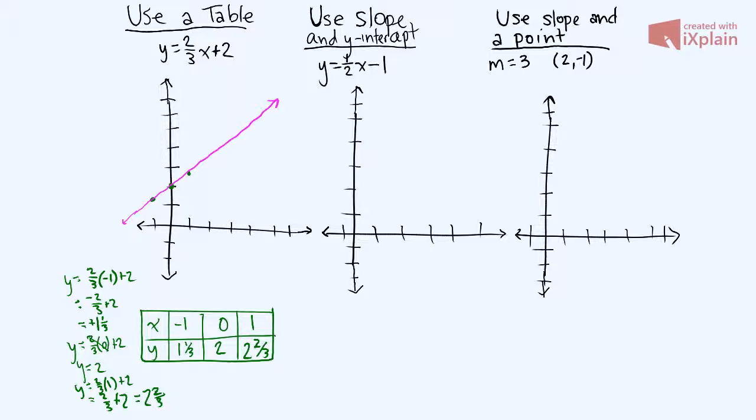The second option that we can do is we can use the slope and the y-intercept. So if it's in slope-intercept form, which is y equals mx plus b, we remember that our b is our y-intercept and m is our slope.